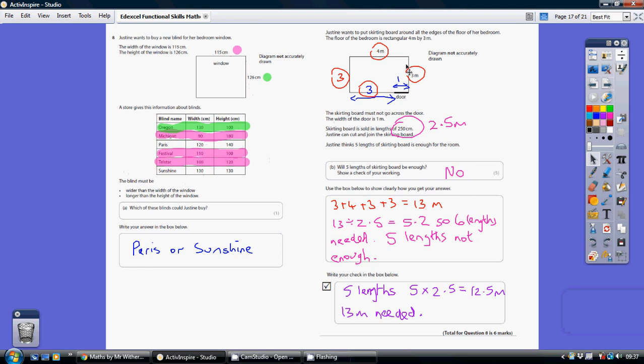Now, over here, I've started off by working out how much skirting board I need. I need three meters along here, three meters up here, four meters along here, three meters along here. I knew this length was three here because I'm told the width of the door is one meter. If that's one meter, then this length must be three meters because together they must add up to four.